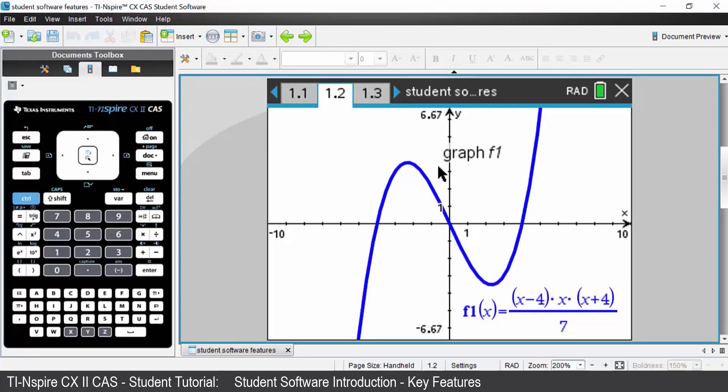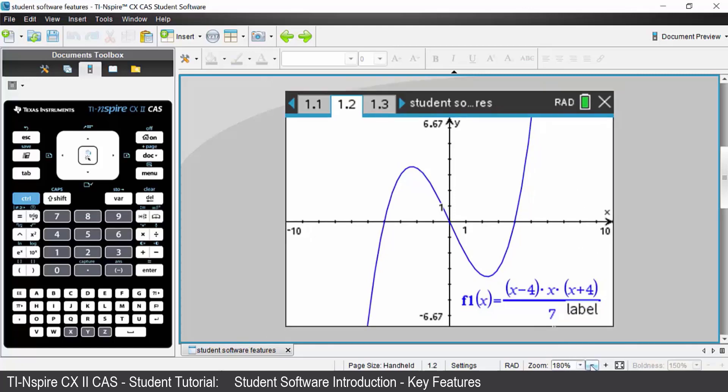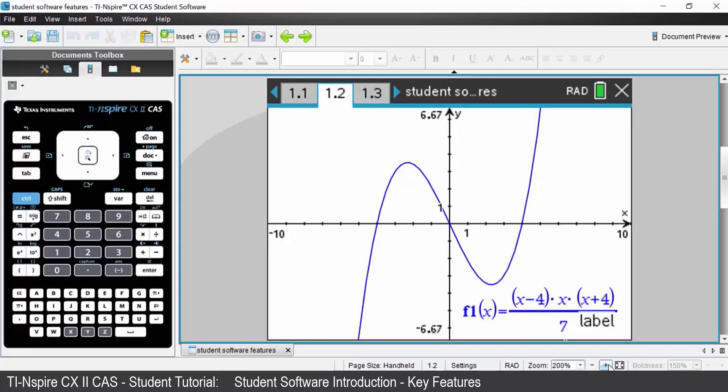To change the size of the screen that you can see, you can change your zoom window down the bottom. You can zoom out, you can zoom in and change that screen size.